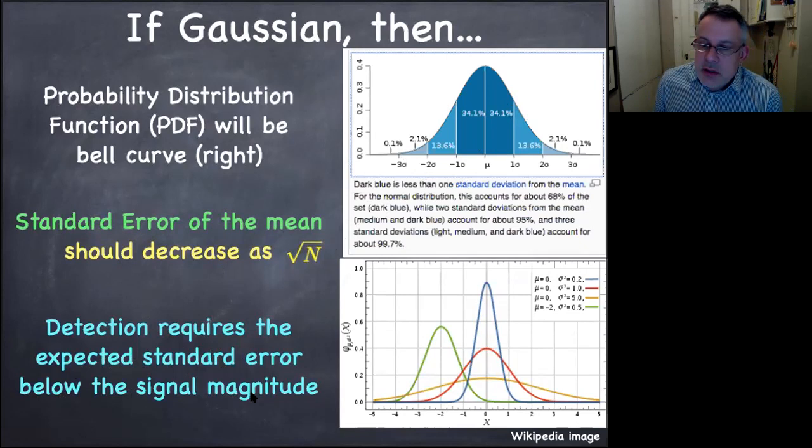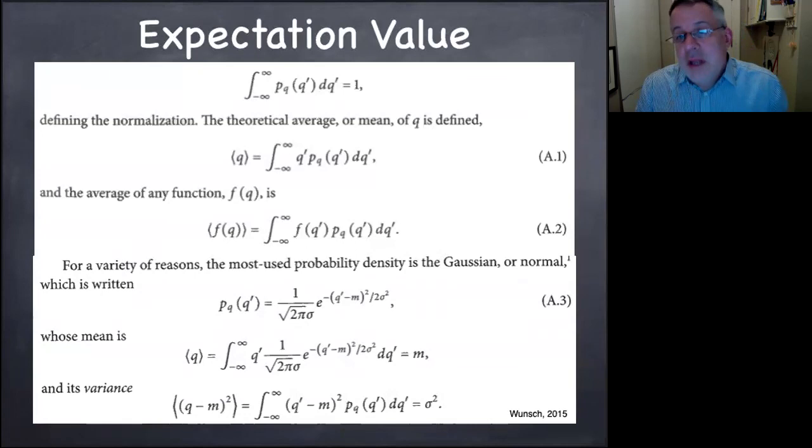So if we want to detect a signal, we have to have the expected standard error be below the signal magnitude. What does that mean? So here are some examples of different PDFs all clustered around zero, and this green one over here is a nice example of one that probably is detectably different from zero. These three differ in their standard deviations. This one differs in both its mean and standard deviation. So we can pretty confidently say that the mean of this distribution, the mu here, is non-zero.